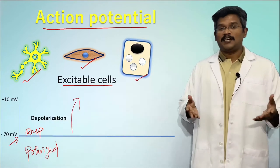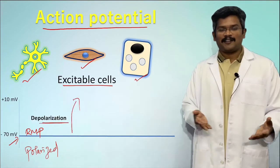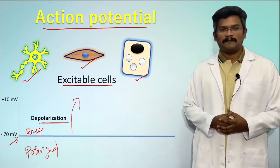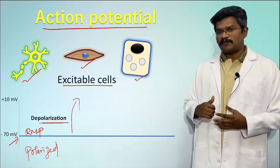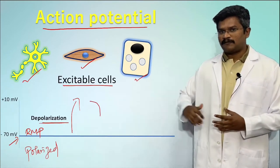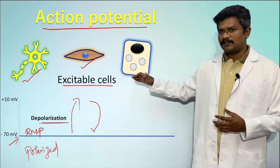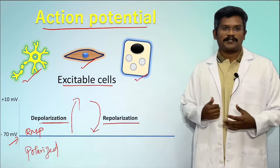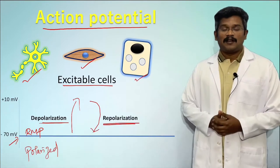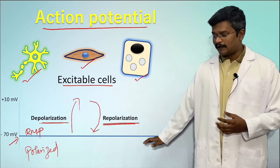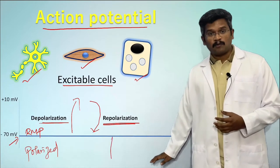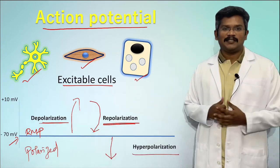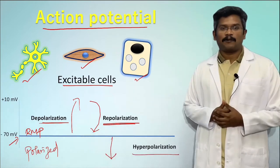The cell is said to have lost its polarity and is called a depolarized state. The restoration of the membrane potential from a depolarized state back to resting membrane potential is called repolarization. If the cell membrane goes more negative than the resting membrane potential, we call this hyperpolarization.